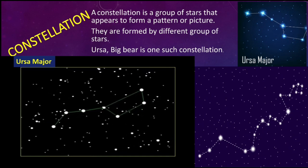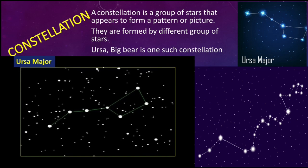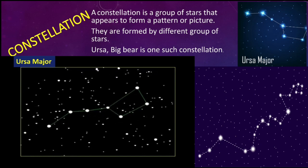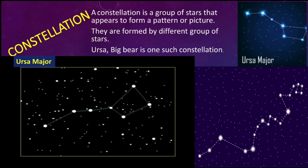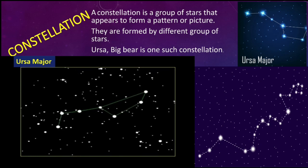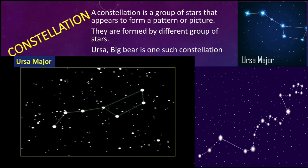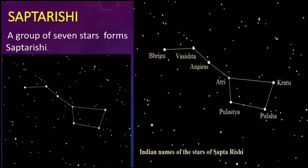Now we are going to see the next topic: constellations. A constellation is a group of stars that appears to form a pattern or picture, formed by different groups of stars. One example is Ursa Major, also known as the Big Bear. Another example is Sapt Rishi — 'Sapt' means seven and 'Rishi' means sages — so it is a group of seven stars, an Indian name for a well-known constellation.